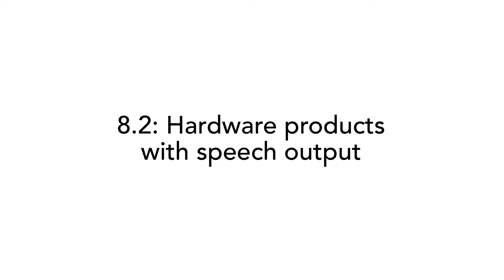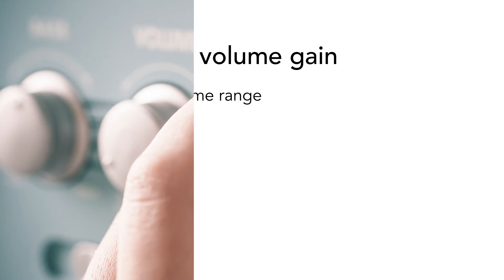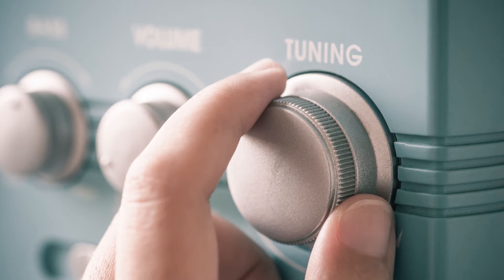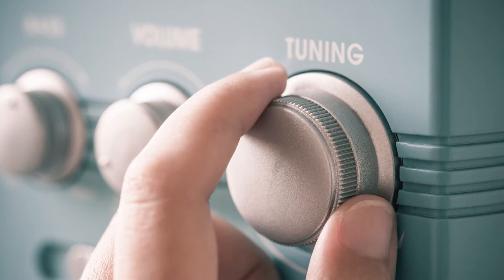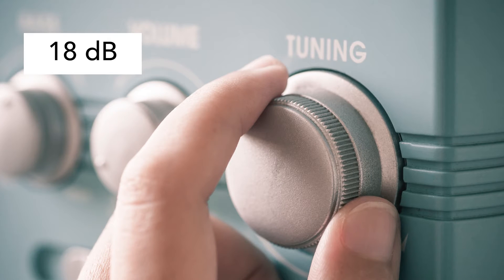The next subsection, 8.2, covers hardware products with speech output. There are four requirements here, divided under two separate headings. The first heading has to do with speech volume and how the user can control it. If the ICT hardware has spoken audio, the user must be able to adjust the volume. This is specified to the range of 18 decibels.